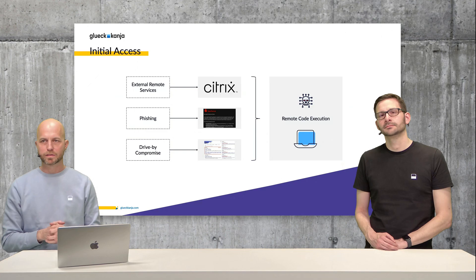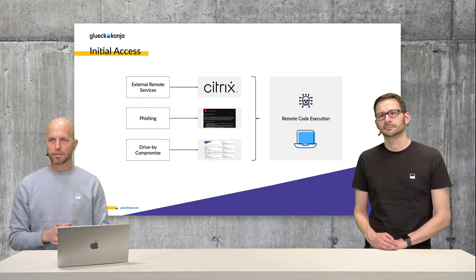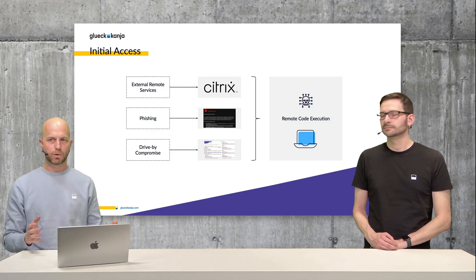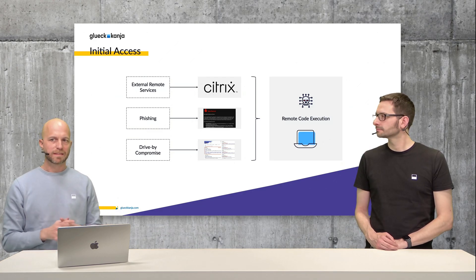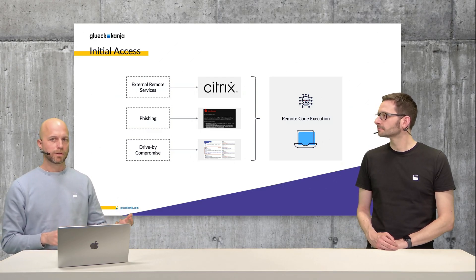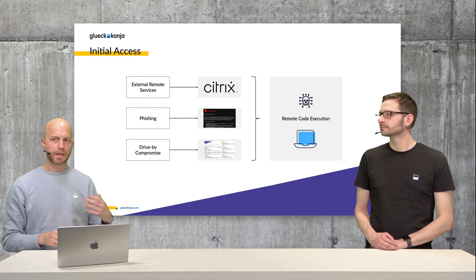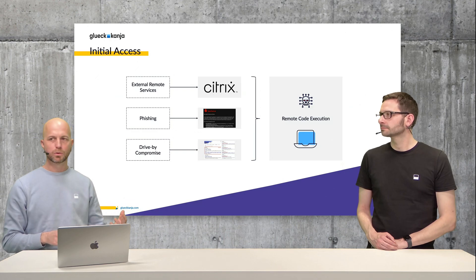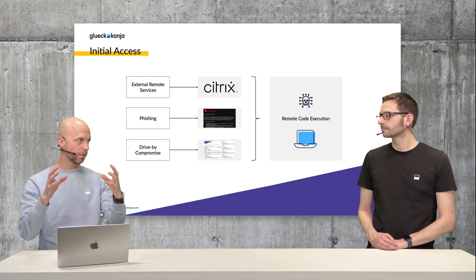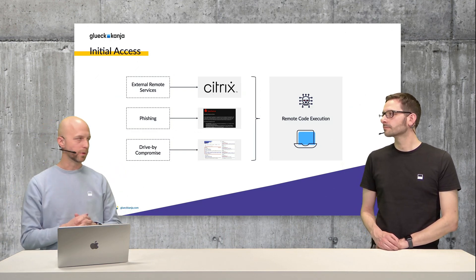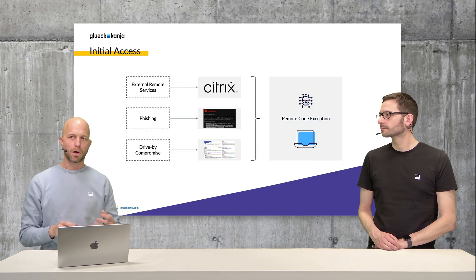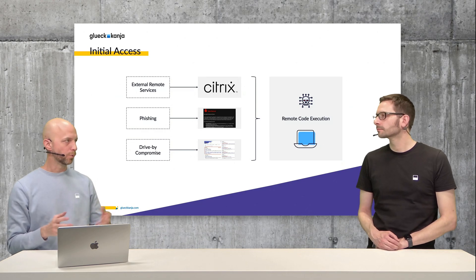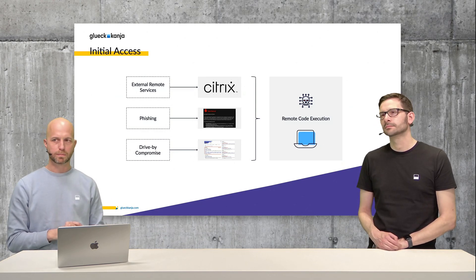For example, customers have published services like Citrix, web servers, or VPN services to the outside world. Or the classic scenario: their users receive phishing emails, they click on them, and then an attacker could execute code on those machines — either on those servers, those external remote services, or on the client machine. The attacker could then execute programs on these machines.